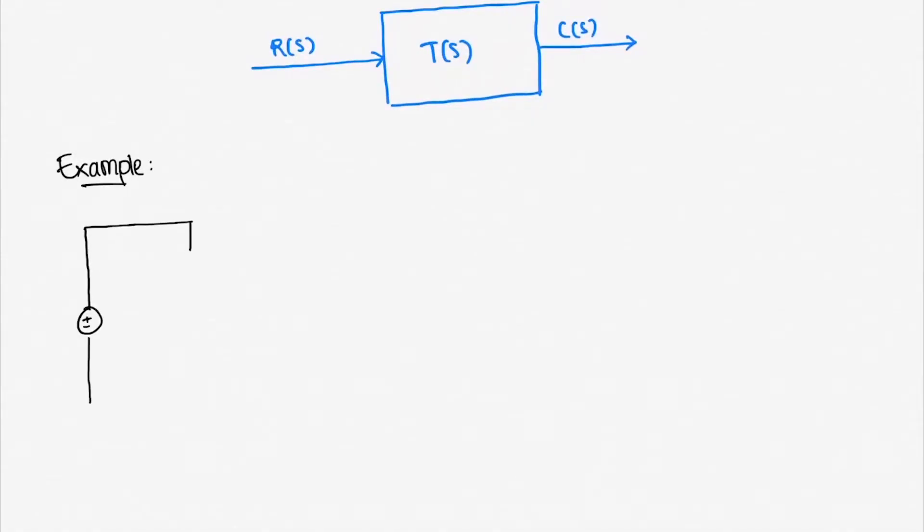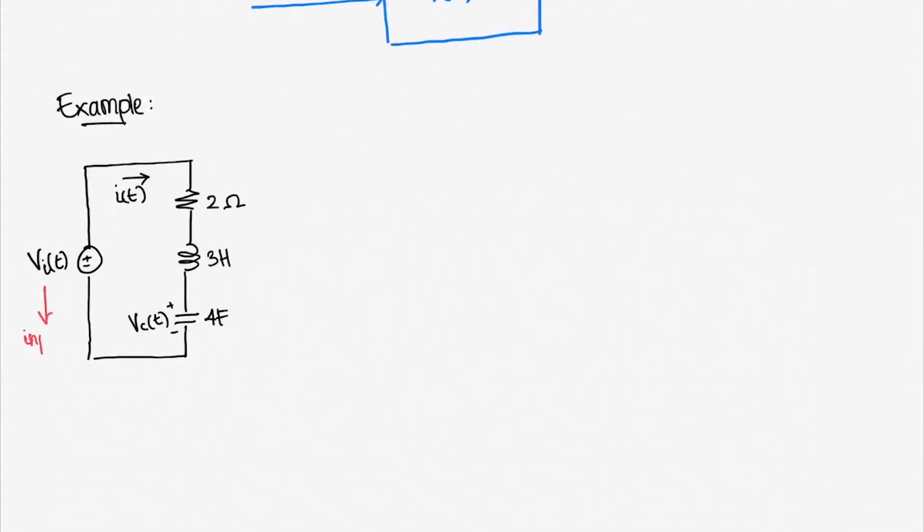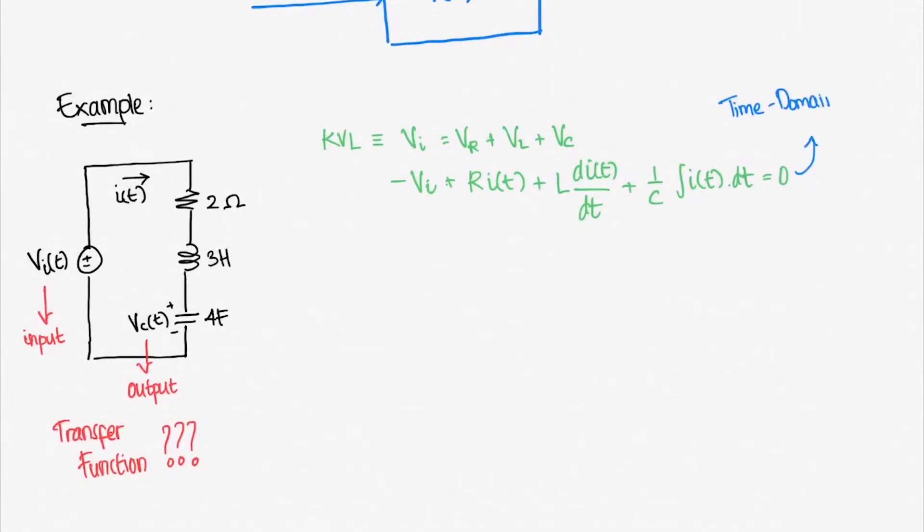Let's use an example. Say we have an RLC circuit as our system. Our input is VI or V input, say maybe it's a battery that you can regulate the voltage, and we are interested in observing the voltage across the capacitor, or Vc. What is the transfer function of this particular system? Well, let's construct the transfer function using Kirchhoff's voltage law. It is obvious that VI equals VR plus VL plus VC. By some algebraic manipulation and our knowledge about basic electric circuits, we can get this equation.